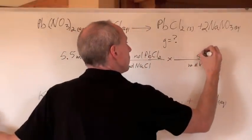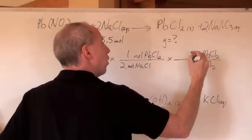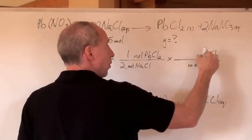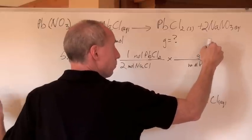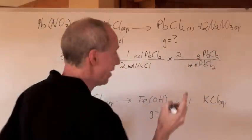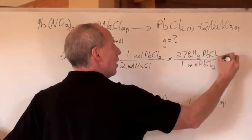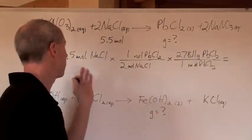So here is the PbCl2 in grams per mole, and by the way, when you do 207.21 plus 70.90, you're going to get 278.11, 278.11 grams, that's the molar mass of this, per mole. Do the math.